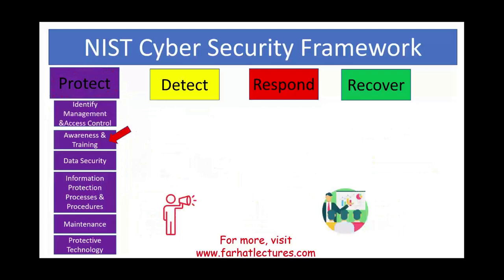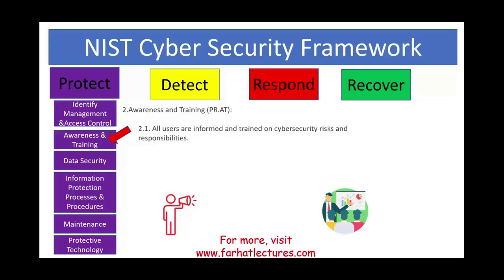Awareness and training is a category under the protect function. If you have the best system but people don't know how to use it or aren't aware of it, it's not effective. All users must be informed and trained on cybersecurity risks and responsibilities. You have to get them involved — for example, in case someone is sending phishing emails for information, users should be aware of this.